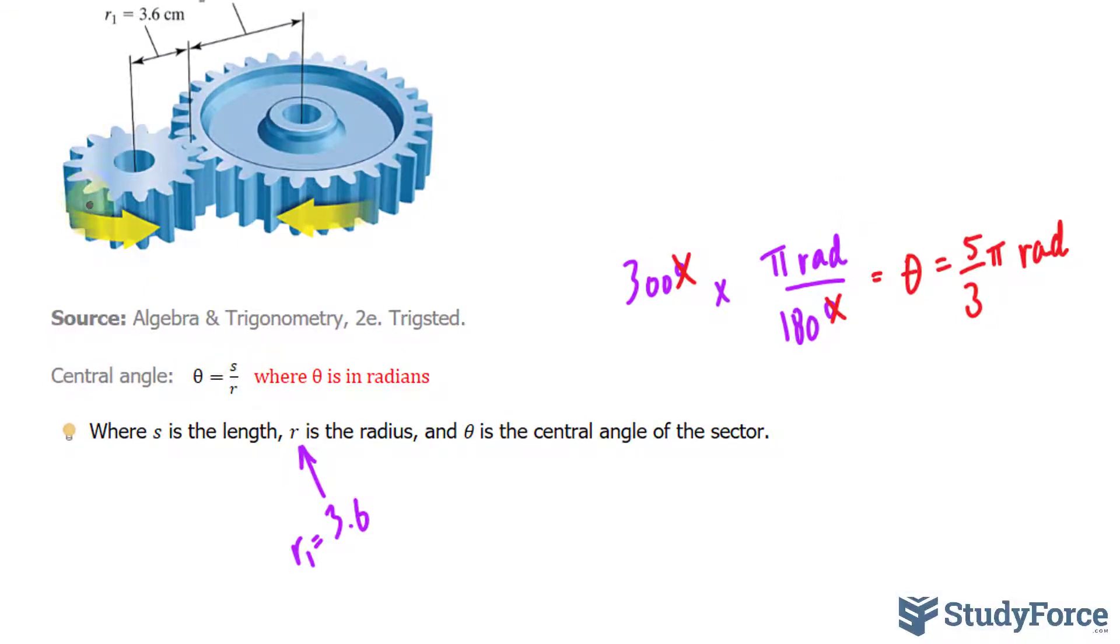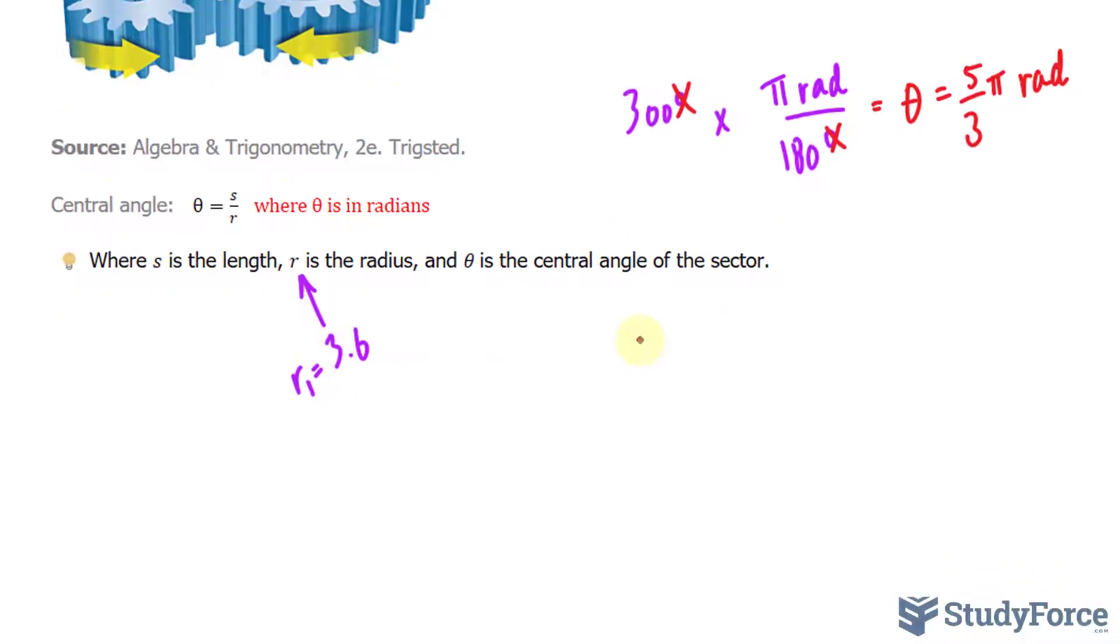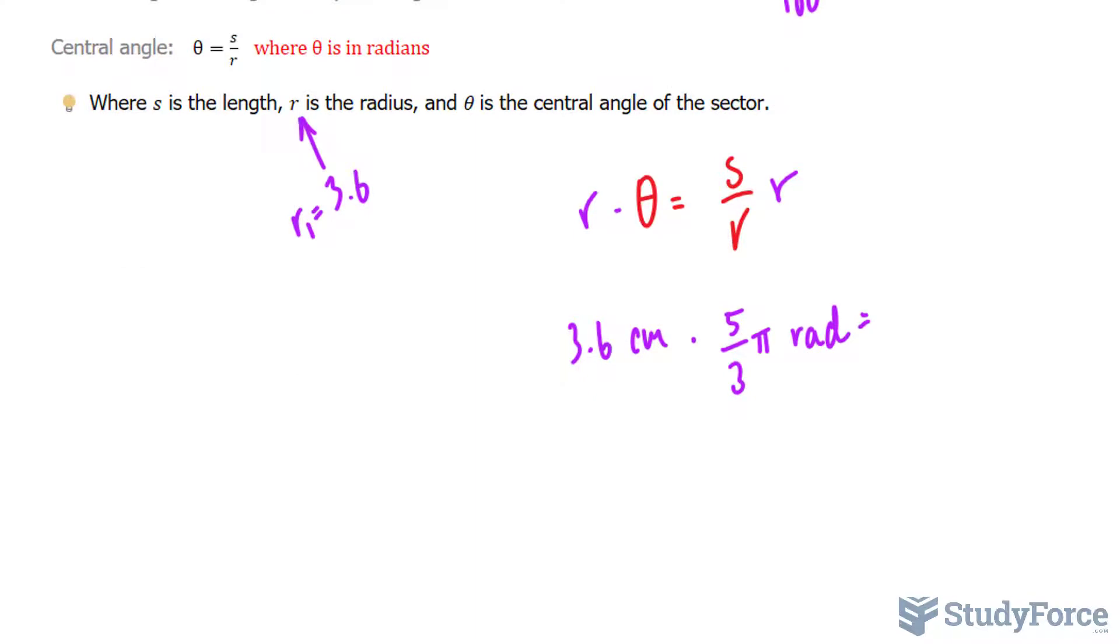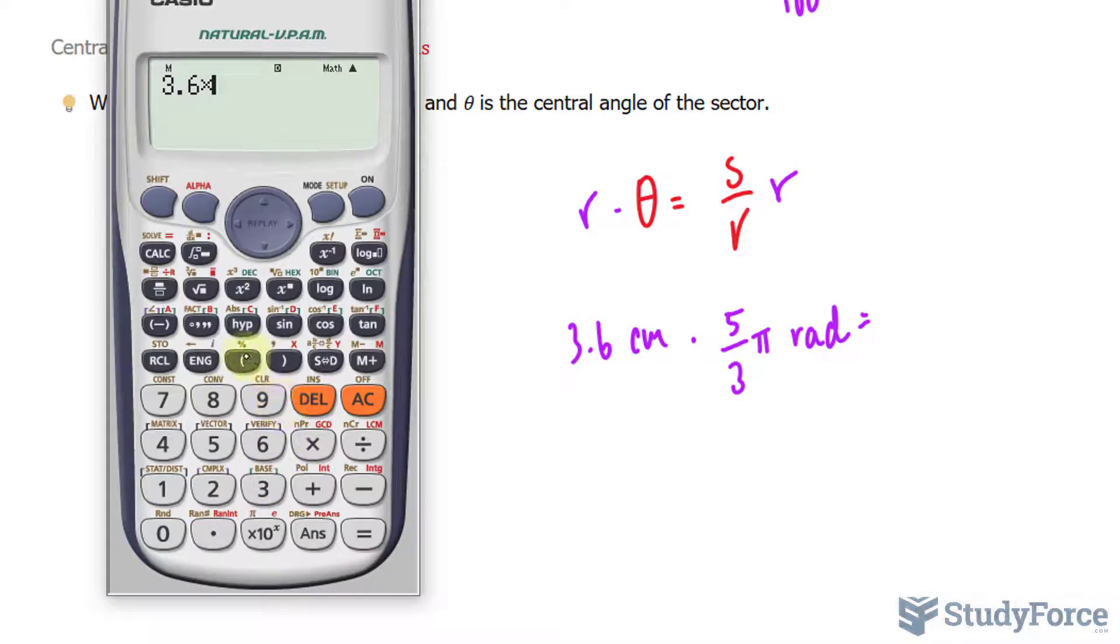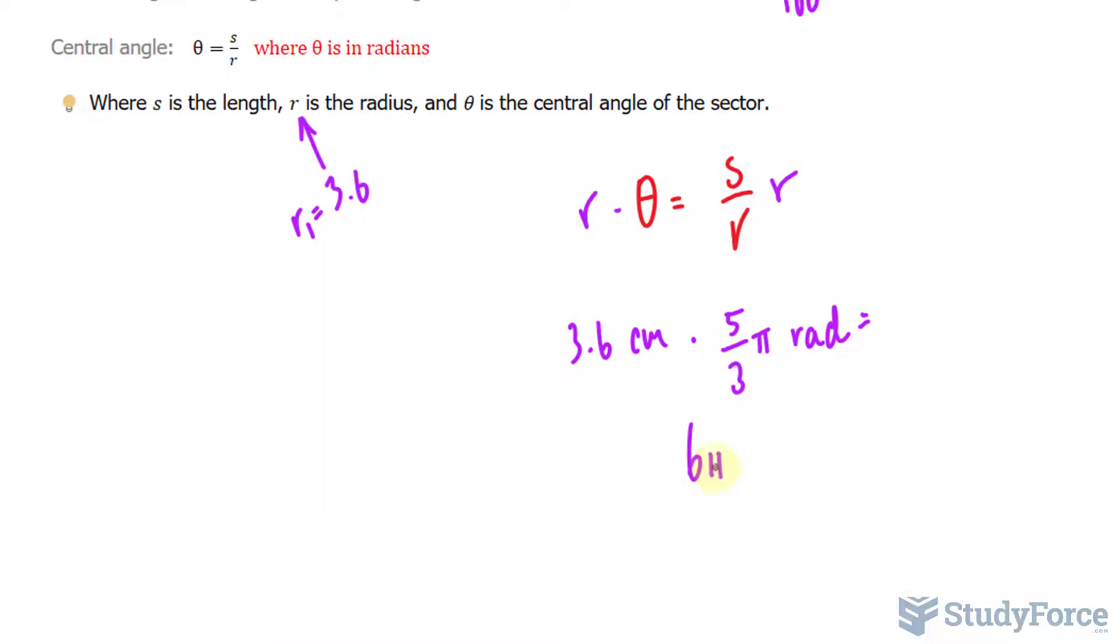So the formula was S over R. We need to isolate for S by multiplying both sides by R. R happens to be 3.6 centimeters multiplied to this value, 5 over 3 pi radians. Let's go ahead and use our calculator. We have 3.6 times 5 over 3, that's equal to 6 pi. That's our value for S.